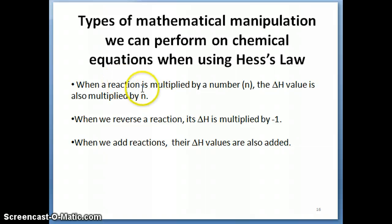So when you take a reaction and multiply the reaction by a number, for example N, then the value of the delta H of that reaction is also multiplied by the number N. If you reverse a reaction then the value of the delta H is multiplied by negative 1, and when you add reactions together then the delta H values are also added together.